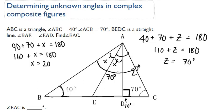To find angle EAC, we know that angle DAC is 20 degrees and the entire angle BAC is 70 degrees. So we can figure out this angle now. 70 degrees minus 20 degrees gives us this angle, which is 50 degrees.